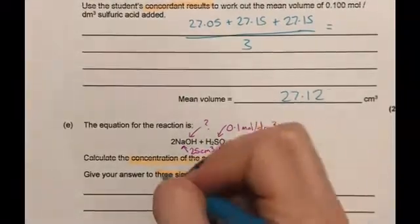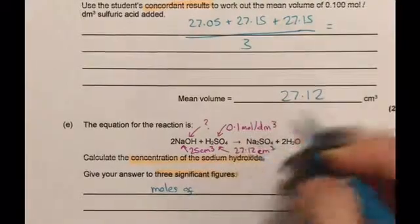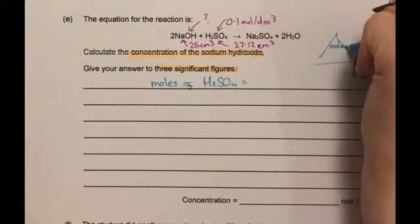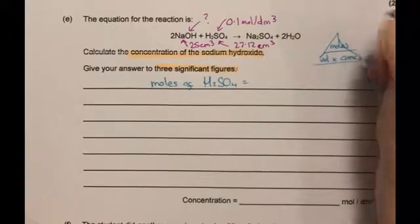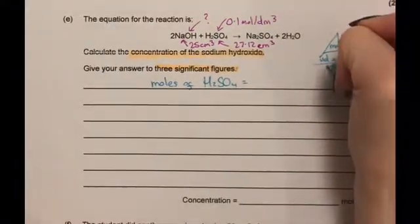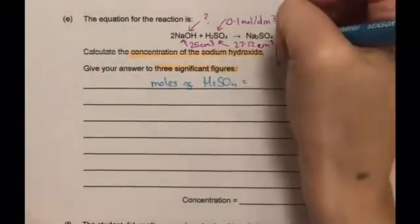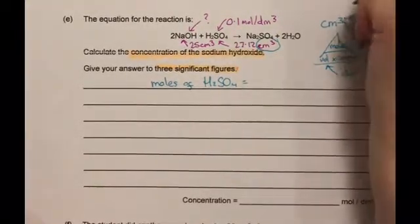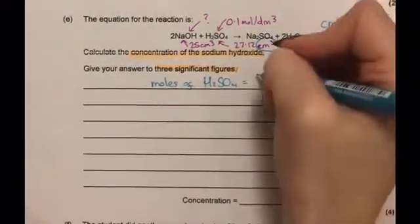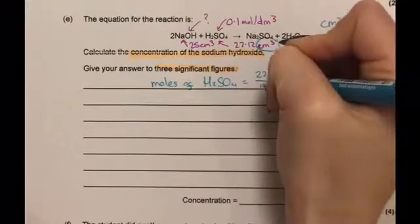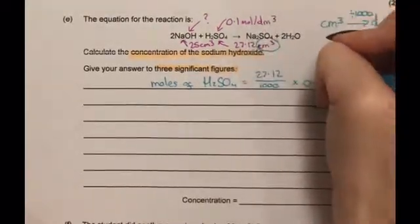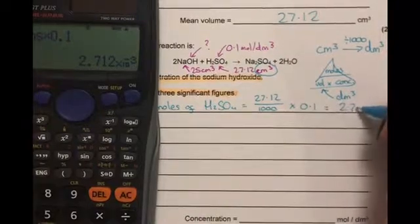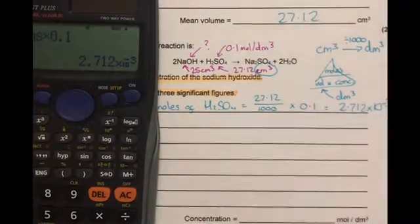So our first step is to work out the number of moles of sulfuric acid and we're going to do that by using moles equals volume times concentration. Now it's important to note that volume is measured in decimetres cubed. Here it's given in centimetres cubed. To get from centimetres cubed to decimetres cubed we need to divide by a thousand. So we're going to do 27.12 divided by a thousand times 0.1, 2.712 times 10 to the minus three.